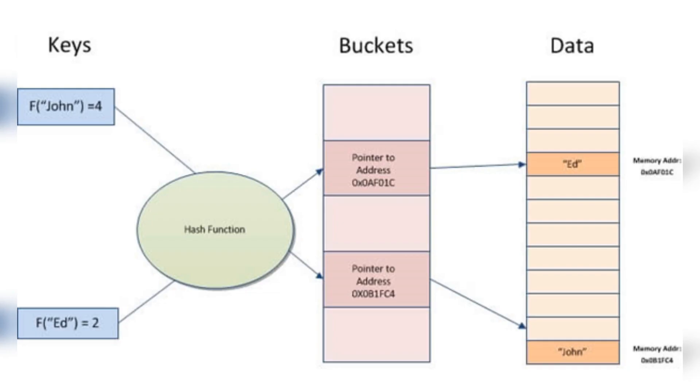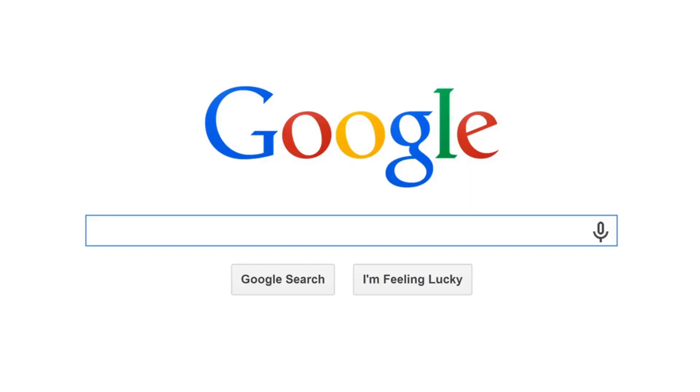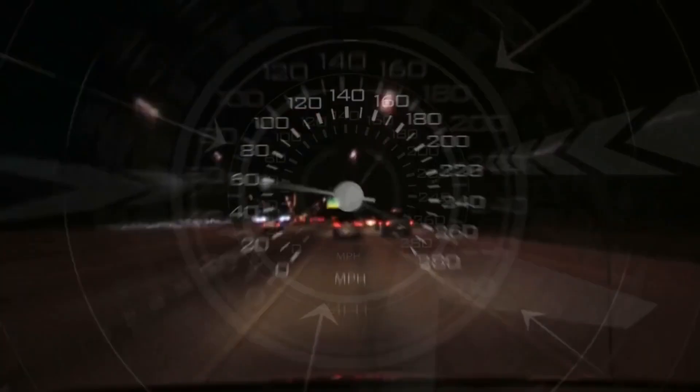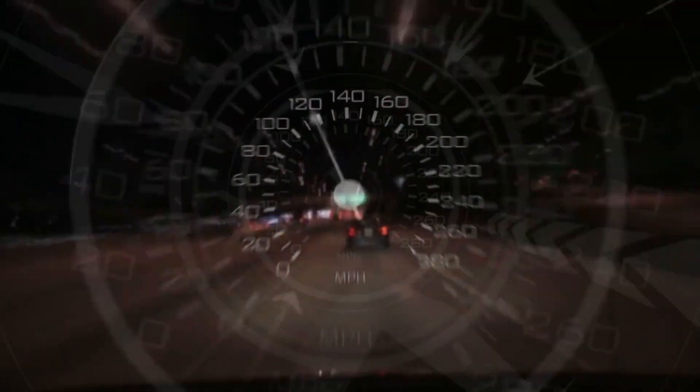Our first contender is the Hash Index, a formidable data structure renowned for its lightning-fast access times. By utilizing a hash function, it generates unique keys for each data item, enabling direct and instantaneous retrieval without the need for traversal. Hash indexes are ideal for point queries, but they might struggle when it comes to range queries.